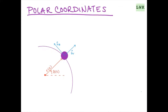Now let's talk about the polar coordinate system. We have a particle traveling along a path with an angle theta and a radial distance r which measures from the origin to the particle. Our unit vectors are ur and u-theta, and these are not constants — they are functions of time. ur always points radially outward, and 90 degrees off of that is always going to be our unit vector u-theta.